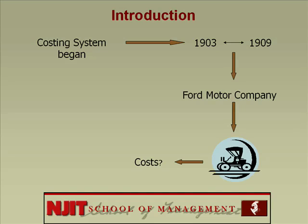So between 1903 to 1909, the accountants of Ford Motor Company came up with a costing system. The costing system that came up around this period, believe it or not, is pretty much the same identical system used by most companies today.